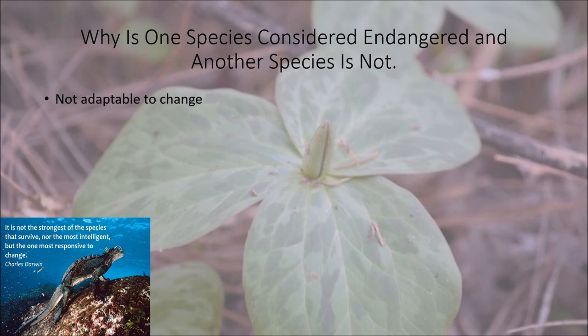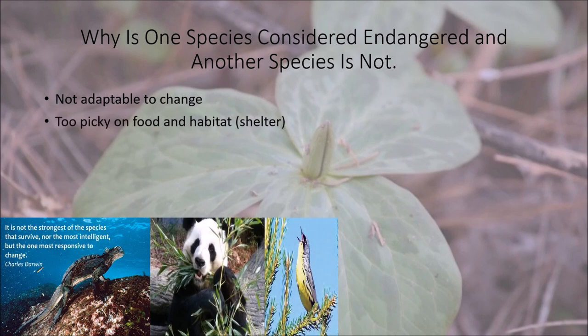Another reason an animal could be considered endangered is being too picky about food and habitat. Pandas eat bamboo — but if human influences cause people to cut down bamboo, invasive species destroy it, or a disease wipes it out and the panda won't eat anything else, the panda is out of luck. Being a very picky eater is not good for survival. That's why animals that adapt so well — raccoons, coyotes, and even bears starting to adapt to human environments — do better.